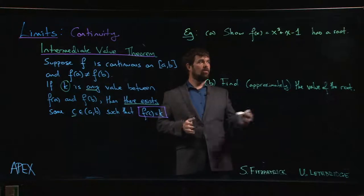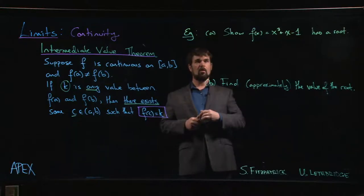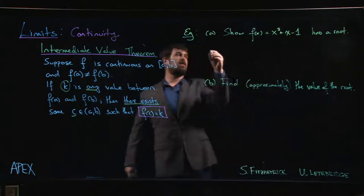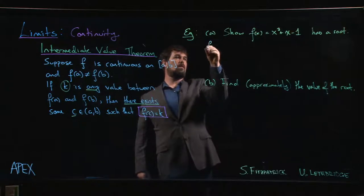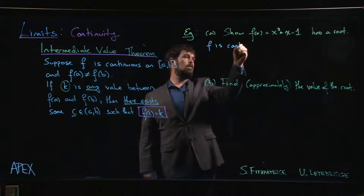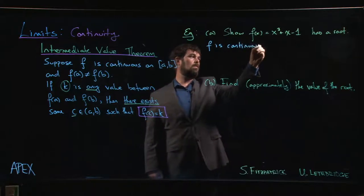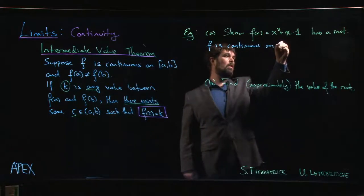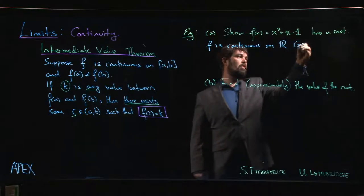To show that a function has a root, well it's polynomial, right? So we know that f is continuous on R, since it's a polynomial.